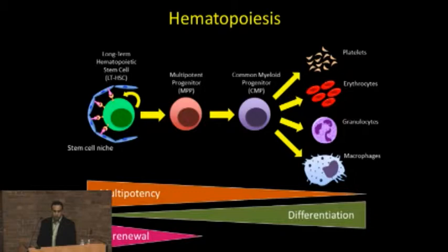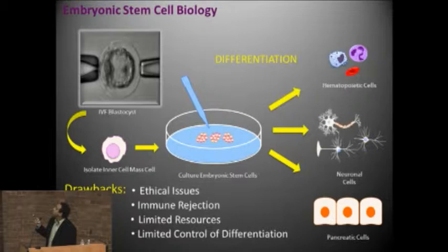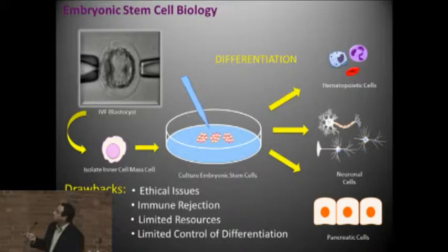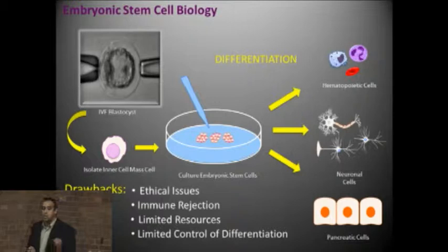Embryonic stem cells came on the scene, and their important feature is truly their developmental potential — not the markers they express, but the fact that they can produce multiple cell types representing all germ layers: mesoderm, ectoderm, and endoderm. There are obvious drawbacks in working with the human system compared to the mouse, including ethical concerns, immune rejection, and limited resource. But the most key issue not talked about enough is how do you actually control differentiation — not support spontaneous differentiation, but control lineage induction to a particular cell type you want.